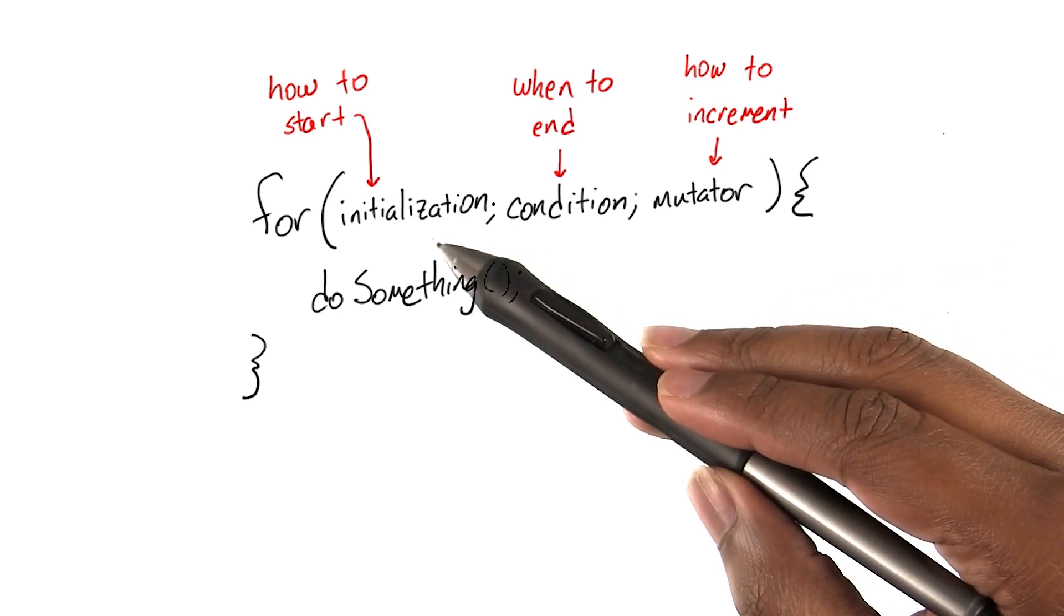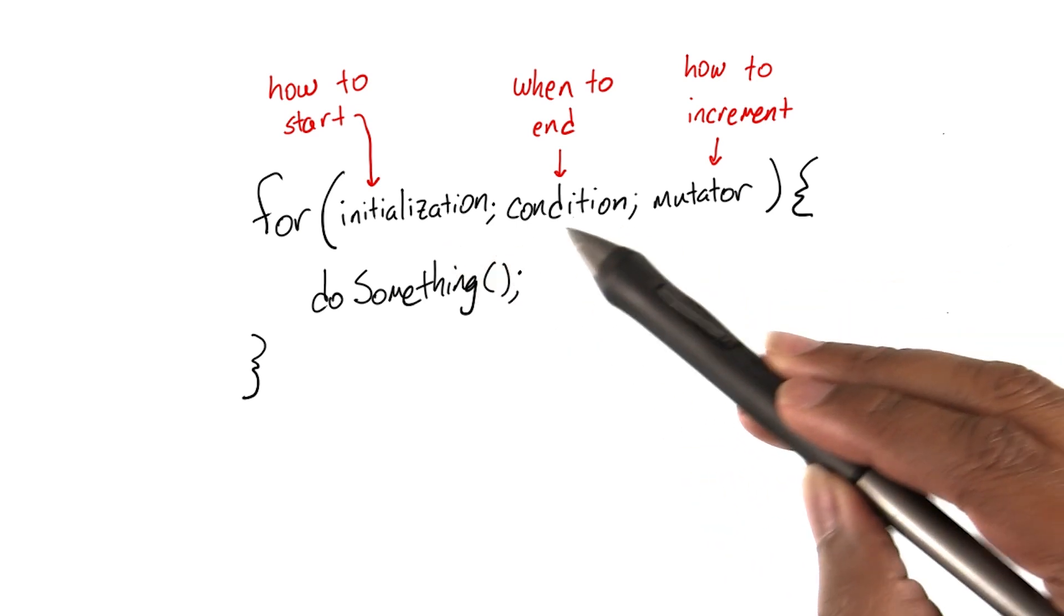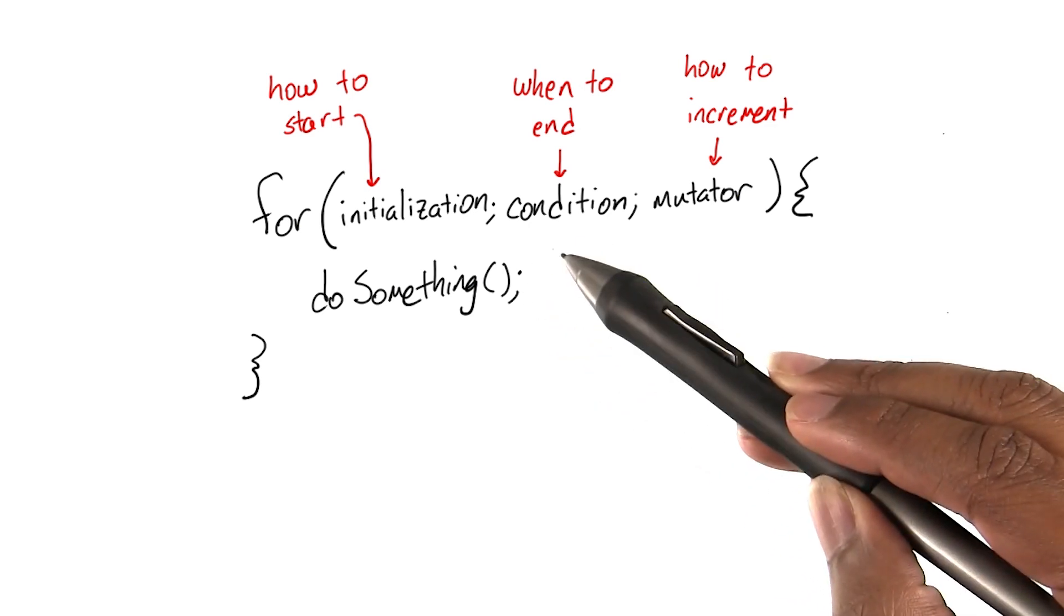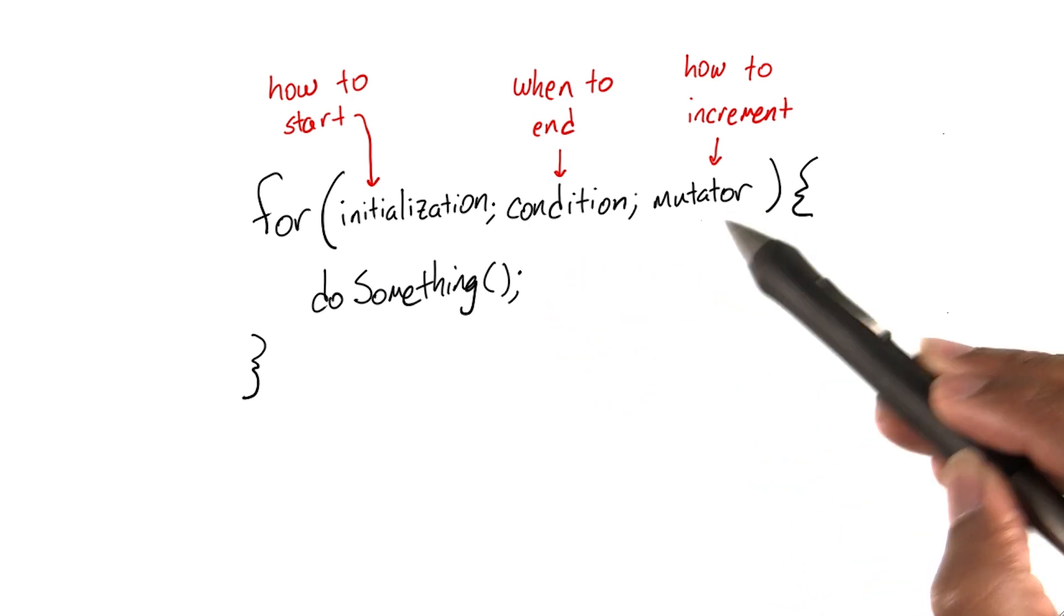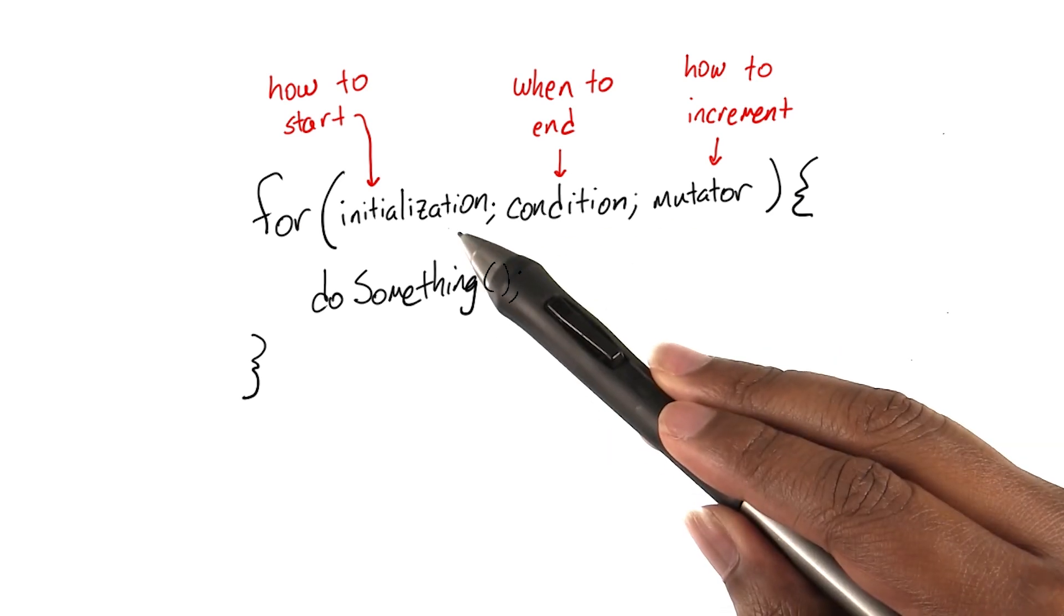We have an initialization value, a condition that gets checked on every iteration of the loop, and a mutator that increments or decrements the initialization value.